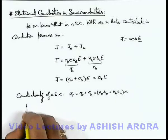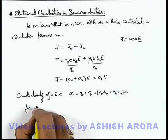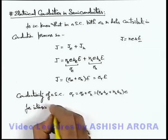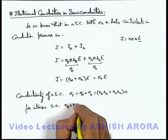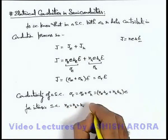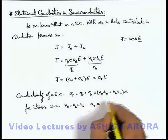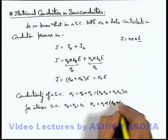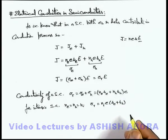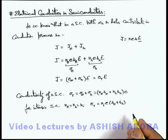And we can also write for intrinsic semiconductors, we know n_e is equal to n_h is equal to n_i, then we can write the total conductivity is equal to n_i·e·(μ_e + μ_h). These relations are quite useful for various analysis. Always keep in mind.